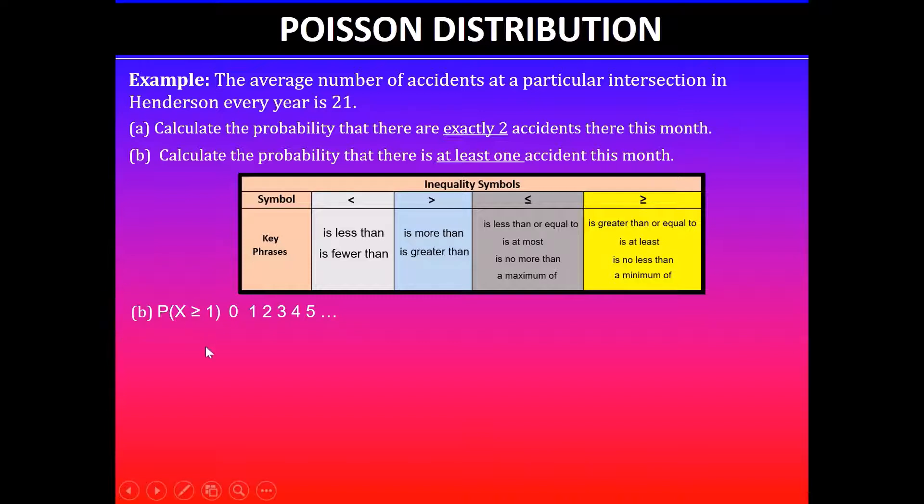Using this information we can clearly see that at least one means greater than or equal to one. In this case, the probability when X is greater than or equal to one will be given by probability when it's exactly one plus probability when it's exactly two plus probability when it's exactly three and so forth.